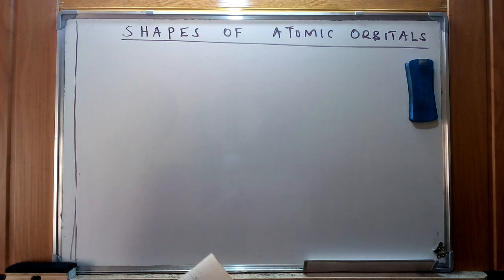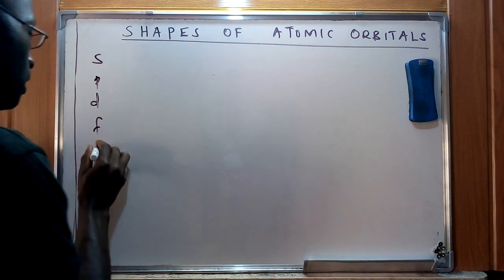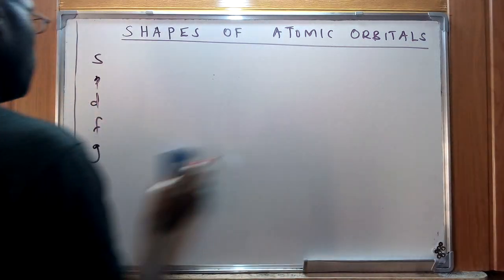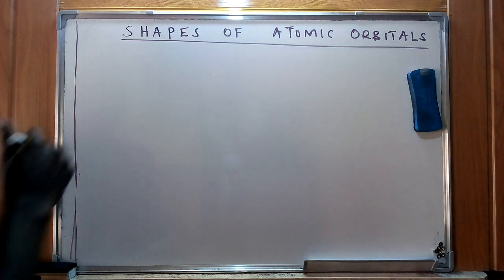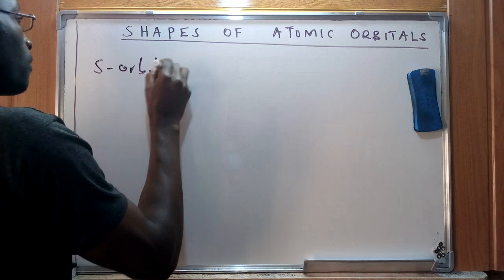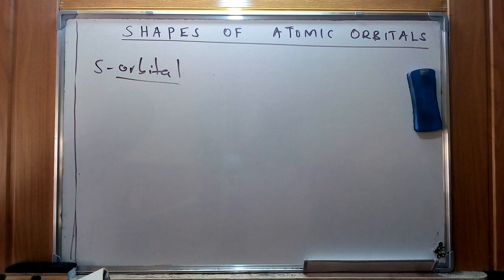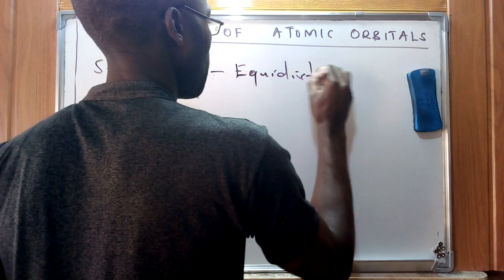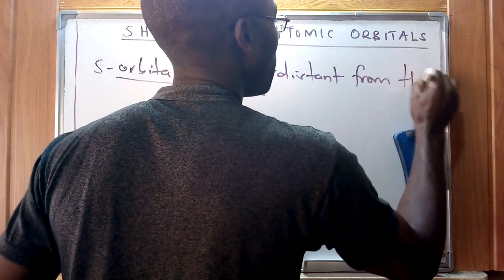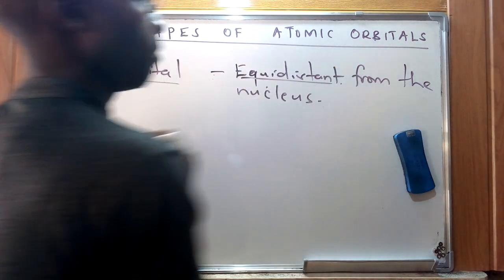We have s, p, d, and f orbitals. We will look at the first three, and if time permits, the fourth. For the s orbital, an electron forms an electron cloud that is equidistant from the nucleus in all directions.